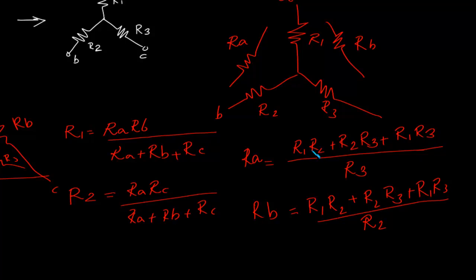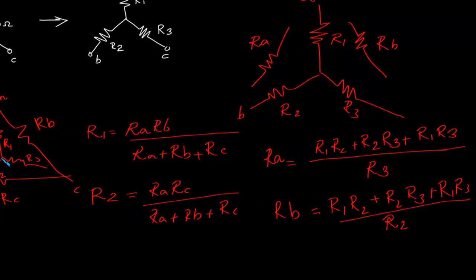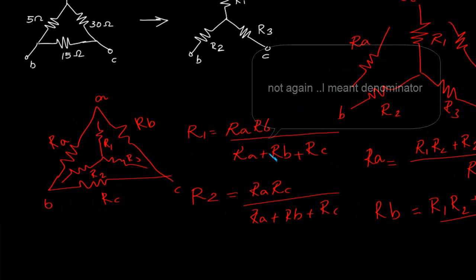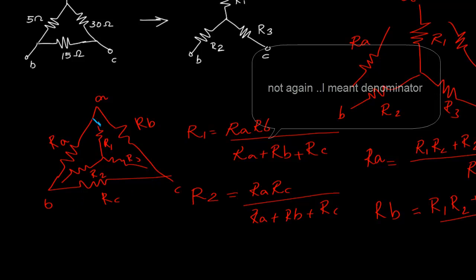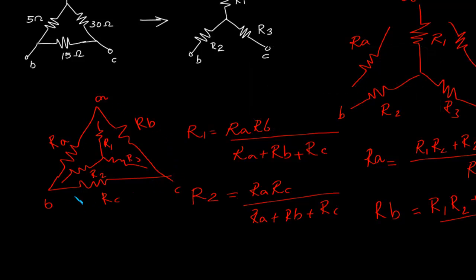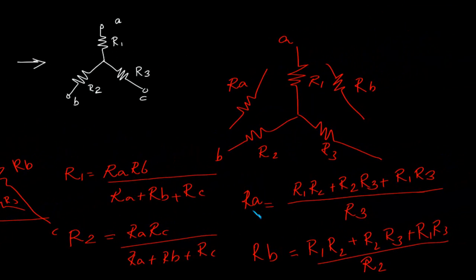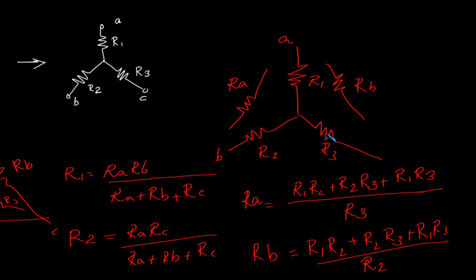Similarly here, we have the product of two resistances at the numerator and you have to divide it by one resistance term to get the same units. So that is how you can remember it. In the delta-to-Y conversion, the denominator is the sum of resistances in the delta — Ra plus Rb plus Rc — and the numerator is the product of adjacent resistances. For Y-to-delta, the numerator is the sum of products of resistances taken two at a time, divided by the resistance opposite to it.